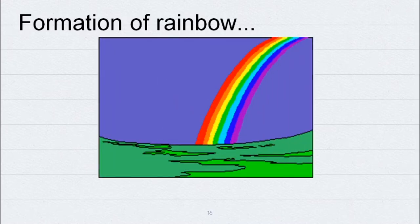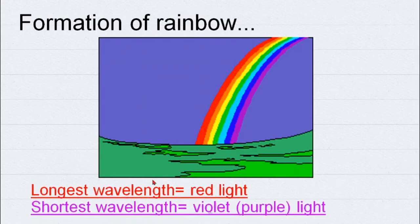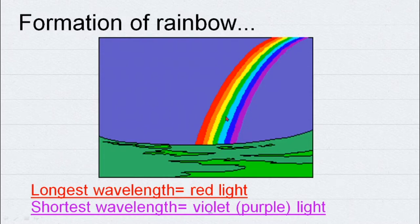We often associate this EM wave with the formation of a rainbow, because in the rainbow we can determine the seven colors dispersed by visible light. The longest wavelength of the seven colors is red light, while the shortest wavelength is violet or purple. Red has the longest wavelength, lowest energy, and lowest frequency. On the other hand, purple or violet has the shortest wavelength, highest frequency, and therefore highest energy of the seven colors in the visible light spectrum.